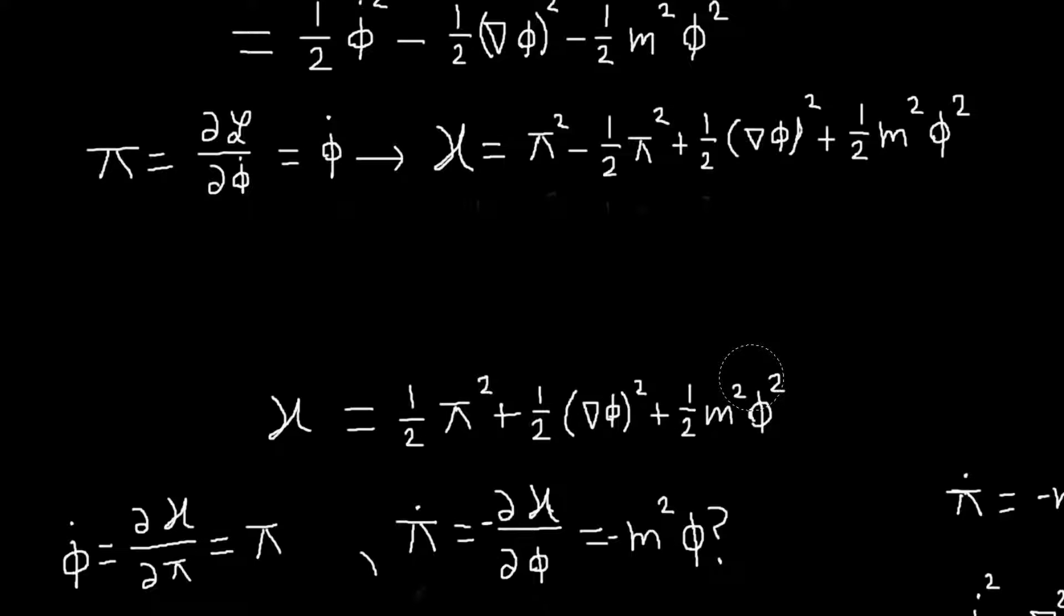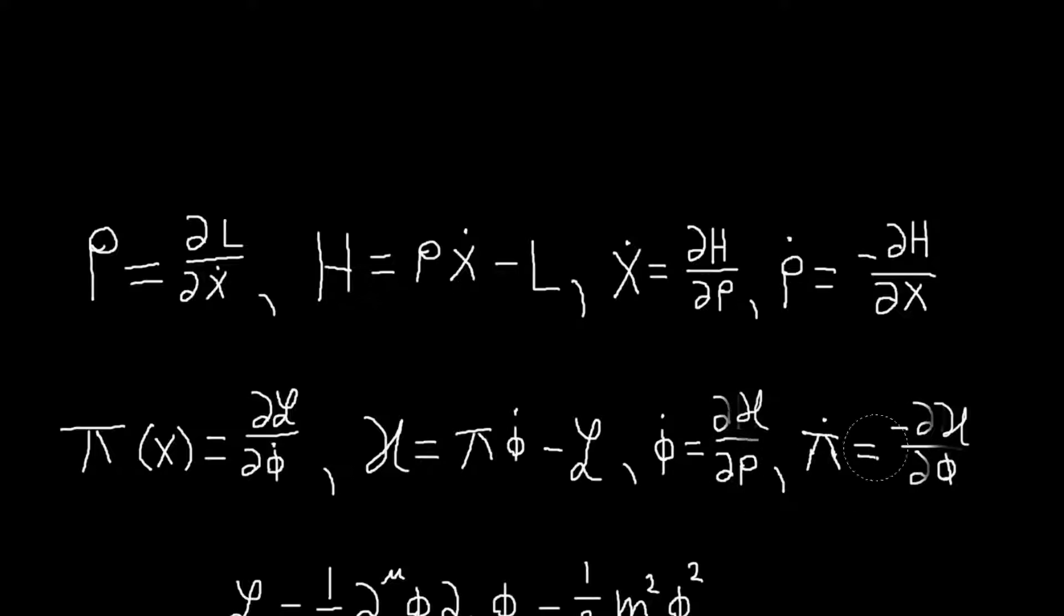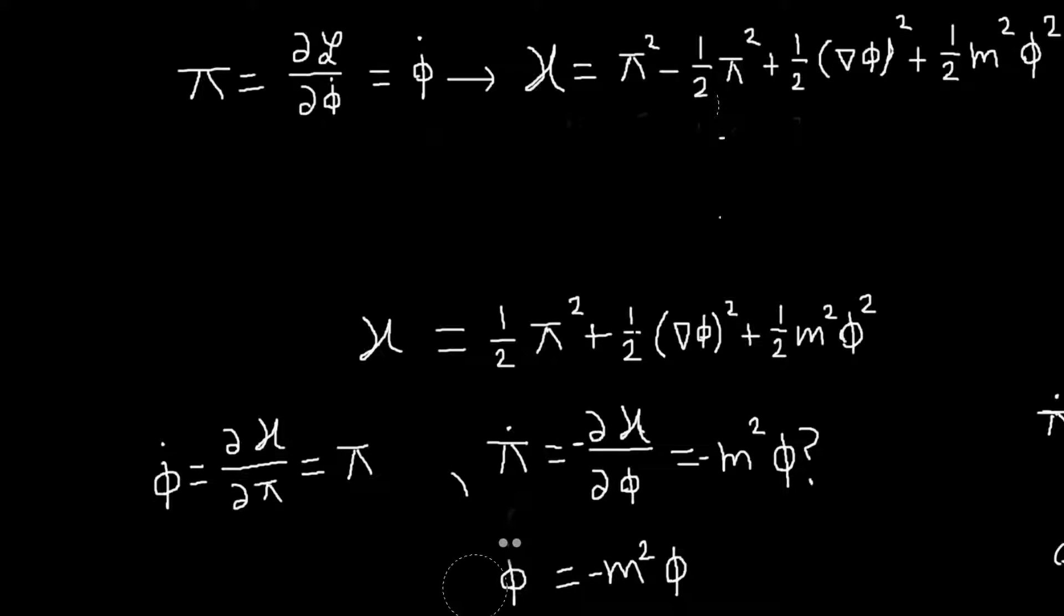So we already know that the Klein-Gordon field satisfies the Klein-Gordon equation, so we would expect that our equations of motion should give that if we calculate these. So let's try and see that. And we'll run into an interesting problem here. So the first equation: phi dot is dH/dpi. That will just be pi. So that's kind of just the definition of the conjugate momentum. No, it's not. We already knew this. We already found this. But the interesting equation is the other one.